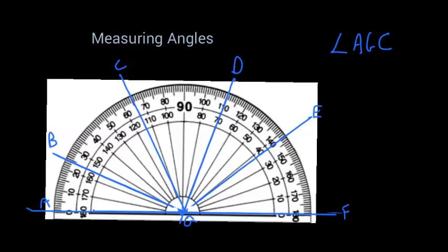So we're starting at A over here, go into G and then up to C. So we start at zero. We're looking at these outside numbers and we're going all the way to 65. So AGC would equal 65 degrees.